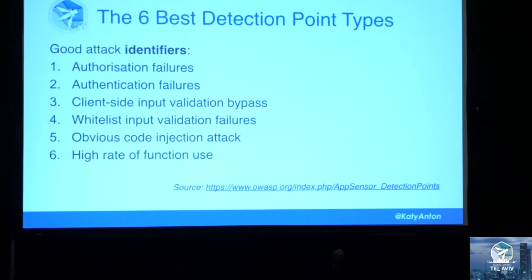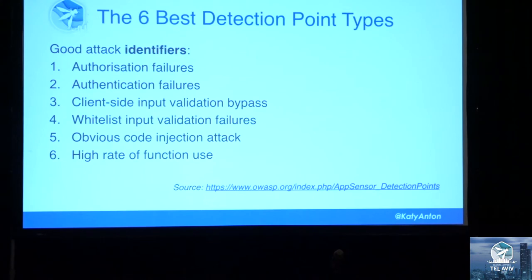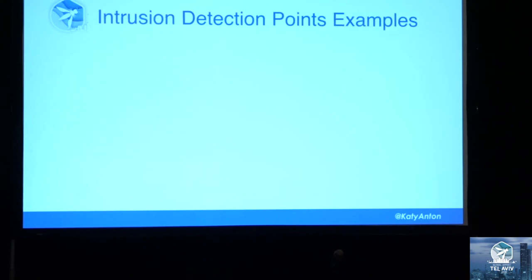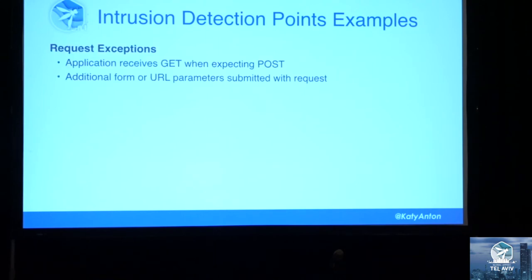The OWASP AppSensor project defines six types of detection points that are good attack identifiers: authorization and authentication failures, client-side input validation bypasses, whitelist input validation failures, obvious code injection attacks like SQL injection strings, and a high rate of function use — for example, a high number of page requests in a very short period of time. In the case of a request, if the application expects to receive POST but instead receives GET, this is a strong indication that someone has intercepted and intentionally changed the communication. This type of anomaly should be logged.